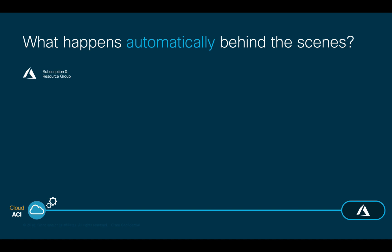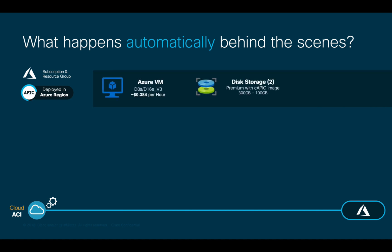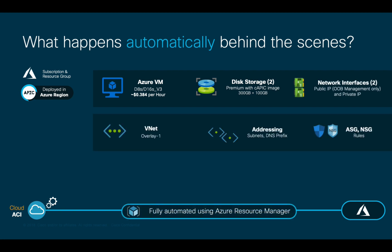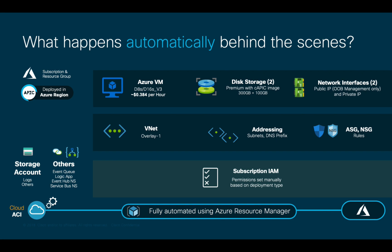If you use Azure instead, all you need to do is subscribe to the Cloud APIC service in a specific region using your Azure subscription and resource group, and a similar automated process will happen for all compute and network services Cloud APIC requires. It also includes the deployment of storage and other specific services needed. Unlike AWS, there are a few things we will need to do manually in terms of permissions, which we will cover in more detail once we configure Cloud ACI on Azure. Just like with AWS, a key pair defined in the deployment settings will be needed if you need to access your Cloud APIC instance through SSH.